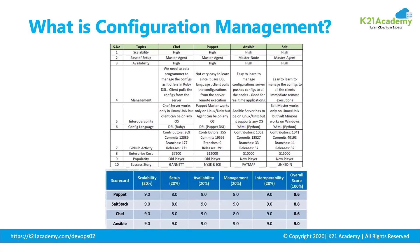On the enterprise cost: setting up Chef takes $7,200 per year, Puppet is $12,000, Ansible is $10,000, and Salt is $15,000. From a popularity perspective, Chef and Puppet are the old traditional tools, whereas Ansible and SaltStack are newer tools. There are a lot of companies using these configuration tools. On the overall scorecard, Ansible stays number one because it's very easy to use and easy to set up.